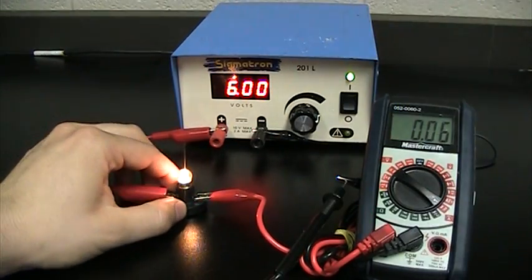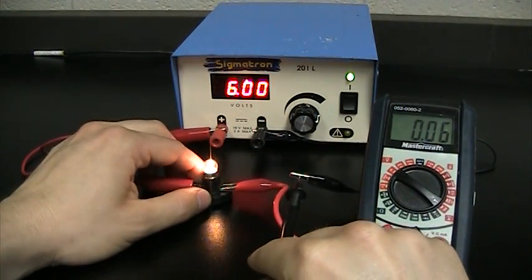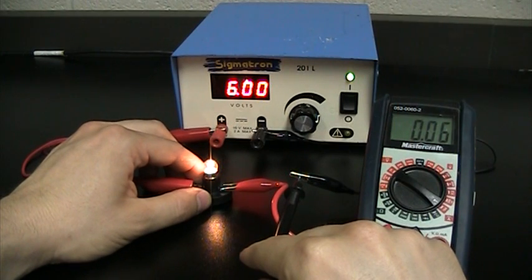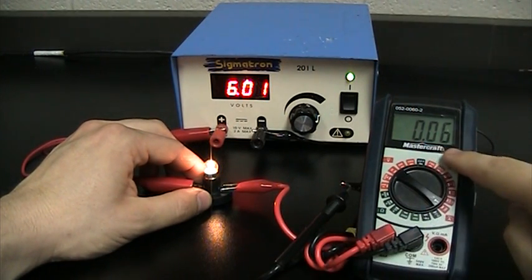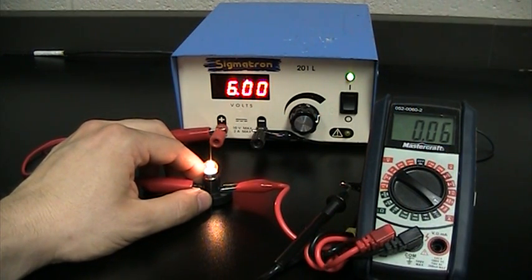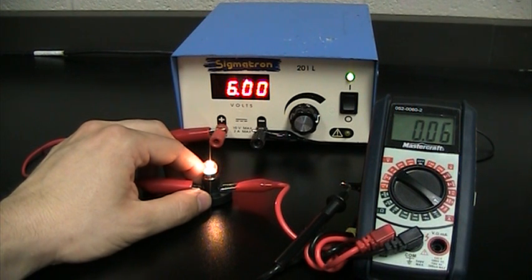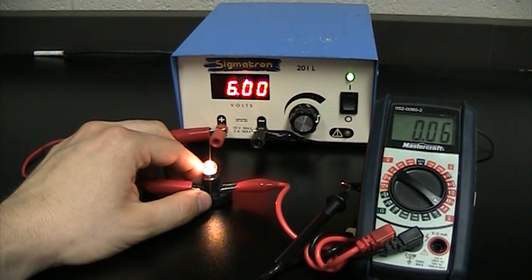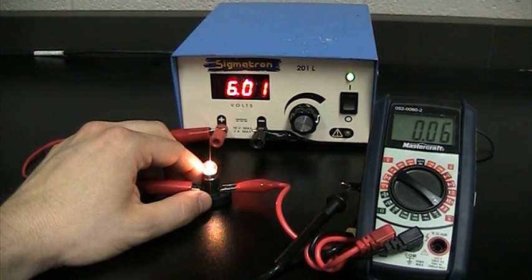And so now that we have physically broken our circuit and inserted our ammeter in there, we see that our amperage reading is 0.06 and that is the flow of coulombs going through this circuit right here. And so that's the foundations of voltmeter and ammeter use.